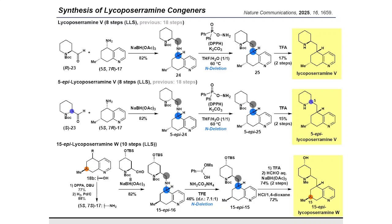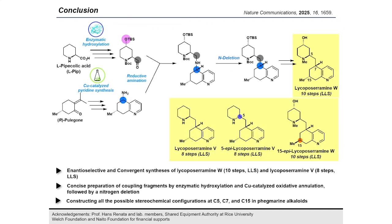Finally, the established strategy was also applied to the synthesis of the C5-epimer of lycoposilamine V and the C15-epimer of lycoposilamine W by starting from the corresponding stereoisomers of the coupling product under appropriate nitrogen deletion conditions. In conclusion, we demonstrated the utility of the nitrogen deletion strategy in the total synthesis of phlegmaryne-type Lycopodium alkaloids and their epimers. The strategy enables diastereoselective conversion and straightforward synthesis of complex molecules starting from linearly available chiral substrates through biocatalytic and chemocatalytic transformations.